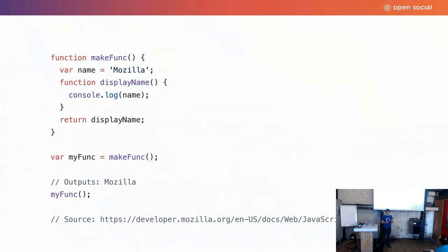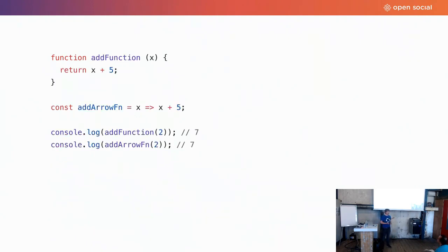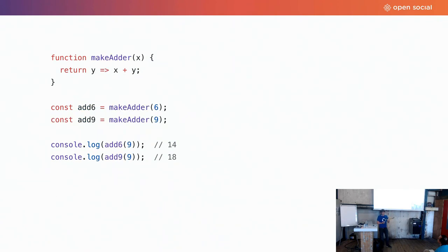Closures allow us to create factories for functions with partial arguments. The classic example is a make-adder function: you call it with 6 and get back a function that adds 6 to whatever argument you give it. That's a good start for creating partial functions and composing functions — and it brings us to functional programming.